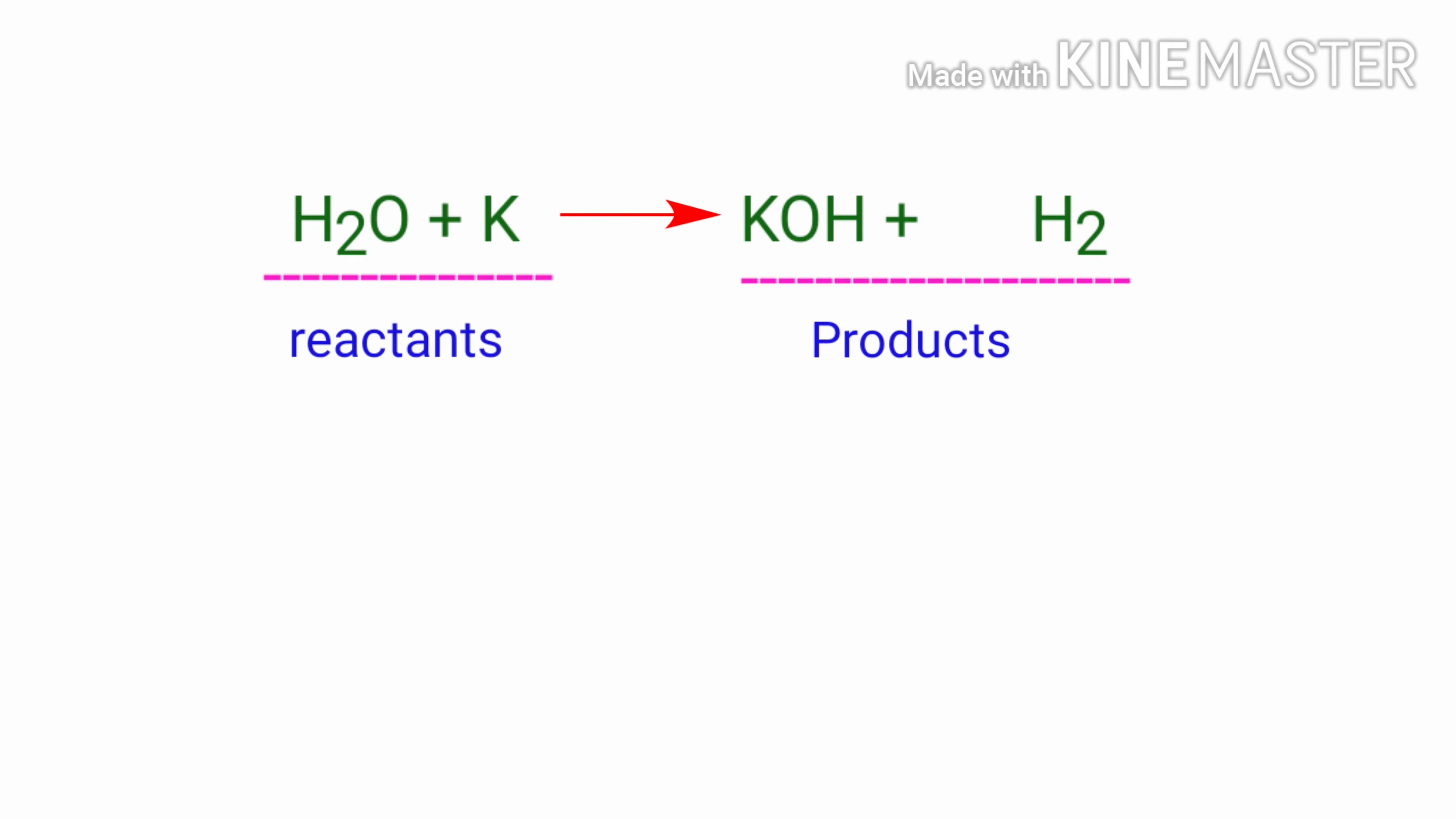In this equation the reactants are water and potassium, and the products are potassium hydroxide and hydrogen.